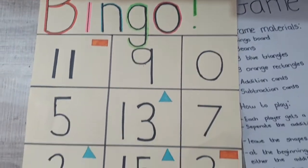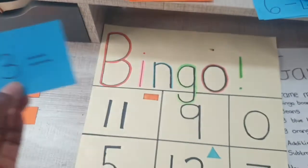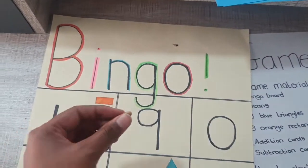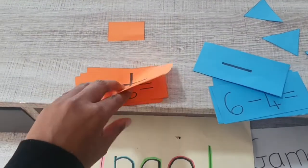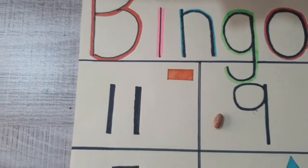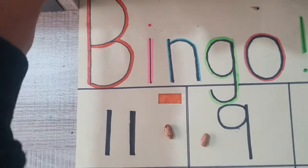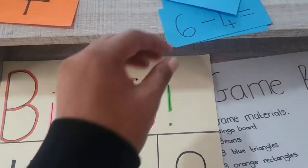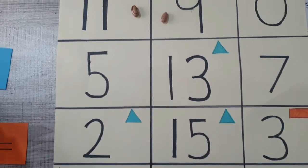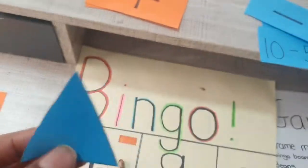It's back to my turn. I pick from the minus pile: 12 minus 3 is 9, but there's no shape on the 9, so I still place a bean on it. Player two picks from addition: 5 plus 6 is 11 — they place a bean on 11 and get a rectangle, putting it in their bank. My turn: 6 minus 4 equals 2 — I have a triangle on that square, so I place my bean and collect a triangle.